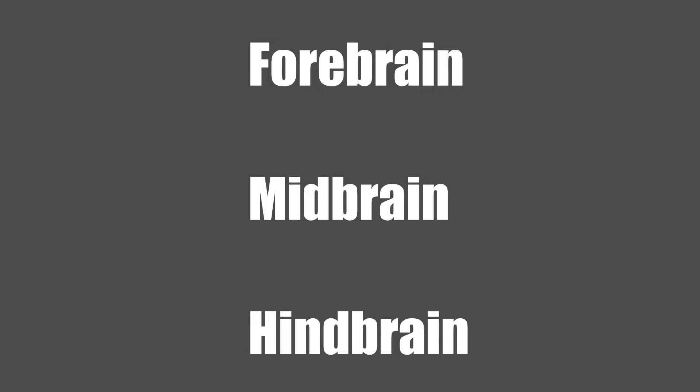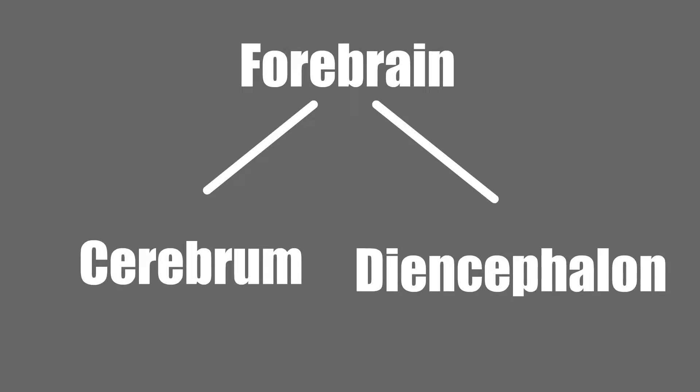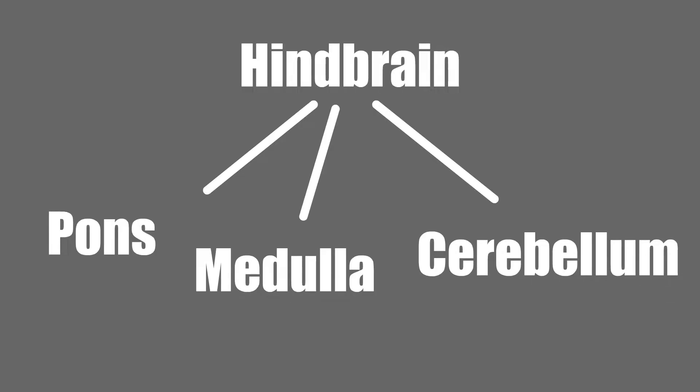The major parts of the brain are forebrain, midbrain, and hindbrain. The forebrain consists of the cerebrum and the diencephalon. The hindbrain consists of the pons, medulla, and cerebellum.